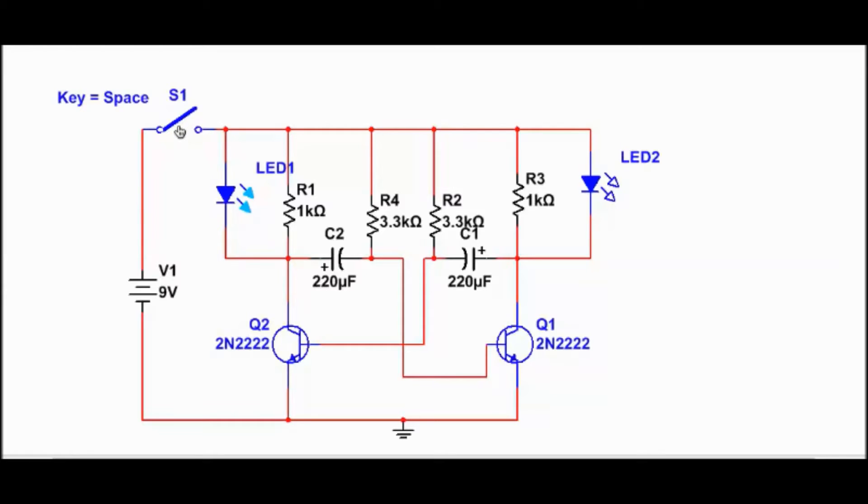Then we have a switch, which is a single pole, single throw switch, which actually activates this circuit. Then we have a diode here, which is a light-emitting diode. We have another light-emitting diode here, and we have a few resistors connected, and also a couple transistors, and a couple capacitors.